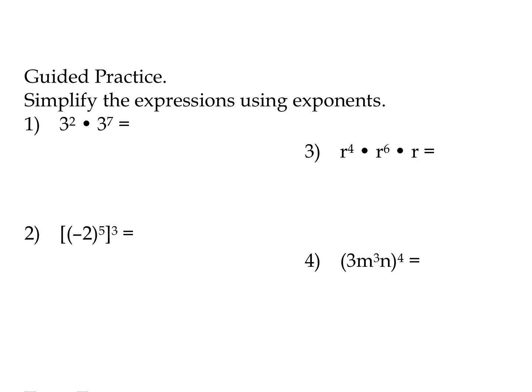So we have some practice problems. We're going to write these using exponents. Our final answer should be simplified — no repeated bases, just the base to some power. In our first example, 3 squared times 3 to the 7th — we have the same base, so we add the exponents together. We get 3 to the 2 plus 7, which is 3 to the 9th.